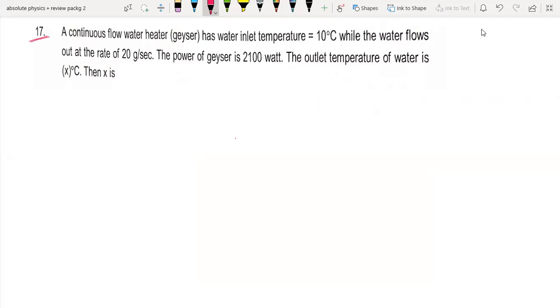And this is question number 17 of section 6. A continuous flow water heater has water inlet temperature 10°C while the water flows out at a rate of